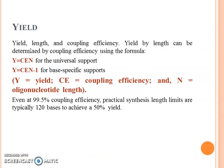The yield depends upon the coupling efficiency of the phosphoramidite. The yield can be determined by coupling efficiency using the formula where Y is the yield, E is the coupling efficiency, and N is the oligonucleotide length. Even at 99.5% coupling efficiency, practical synthesis limits are typically 120 bases to achieve a 50% yield in chemical synthesis of DNA oligonucleotides. Thank you.